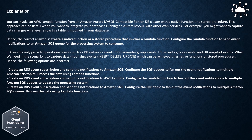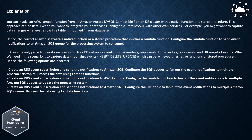Hence, the following options are all incorrect: creating an RDS event subscription and sending notifications to Amazon SQS to fan out to multiple SNS topics; creating an RDS event subscription and sending notifications to AWS Lambda to fan out to multiple SQS queues; and creating an RDS event subscription and sending notifications to Amazon SNS to fan out to multiple SQS queues and processing with Lambda. None of these capture row-level data modification events from Aurora.